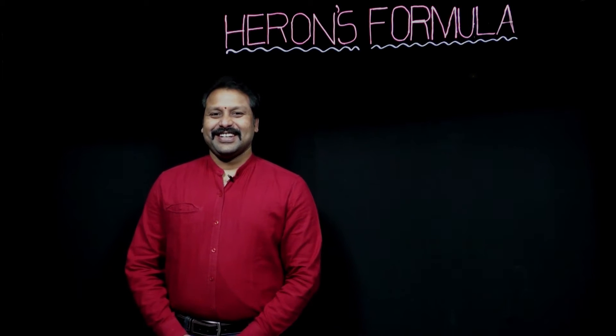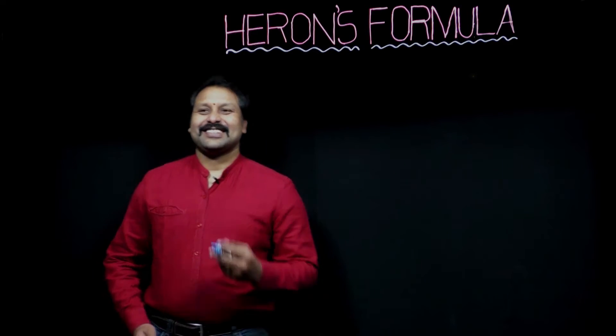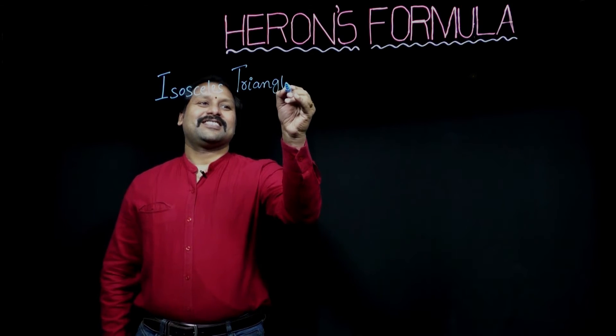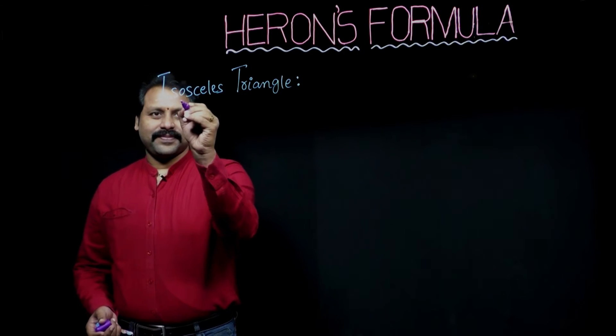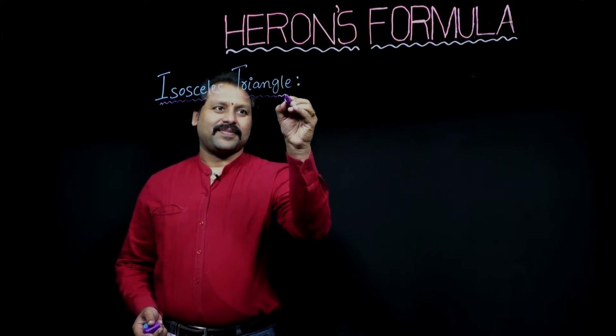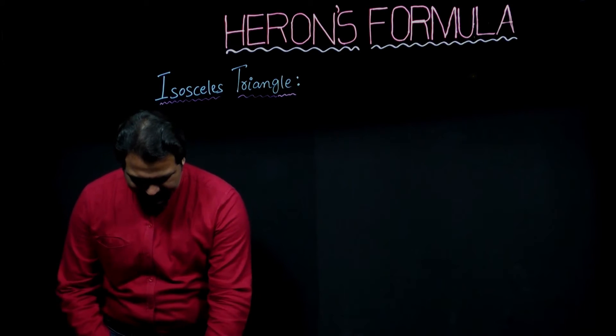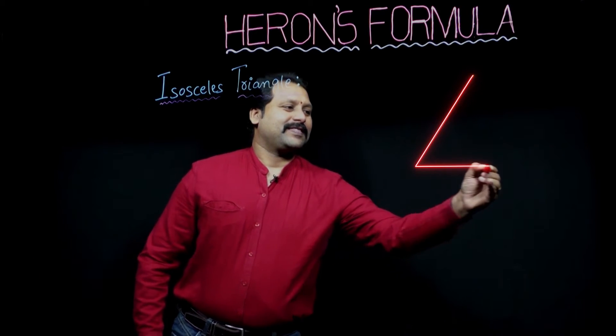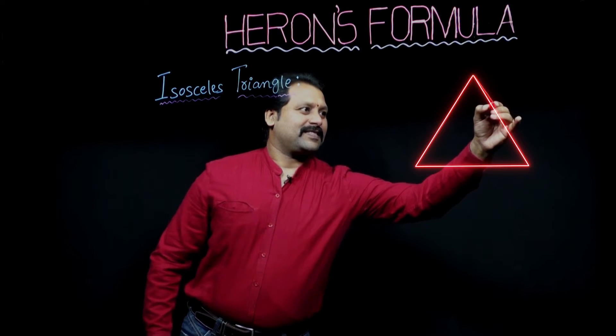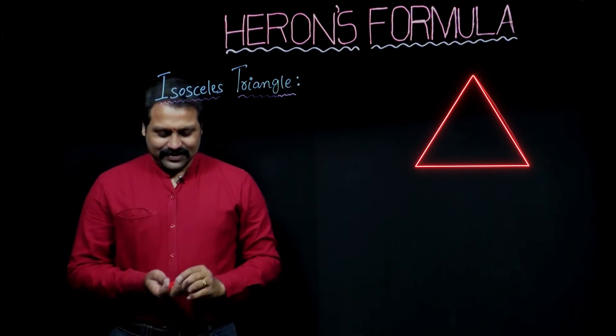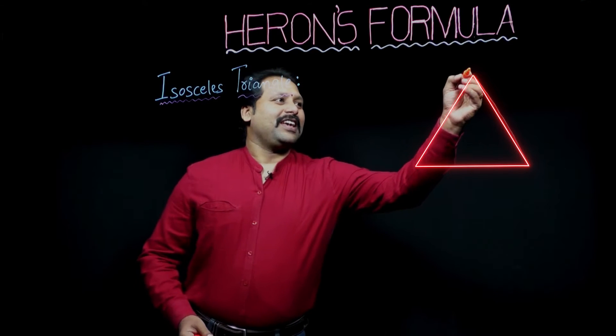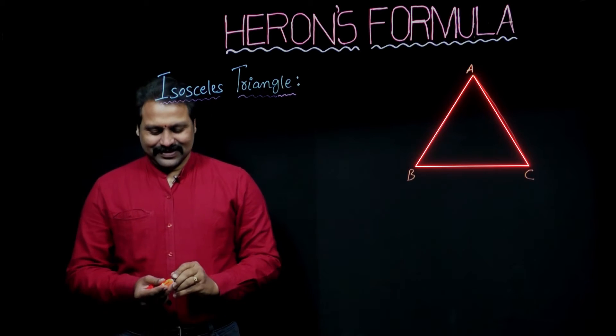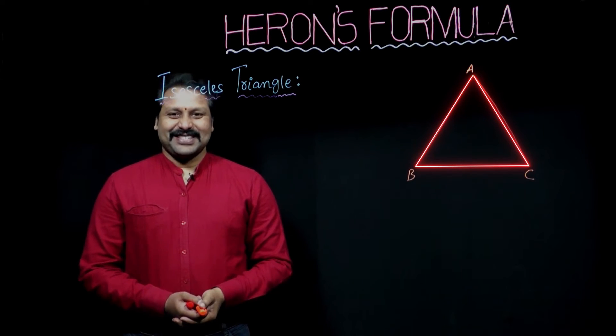Next definition, isosceles triangle. Take the triangle. Here, the vertices are A, B, and C. What is isosceles triangle?